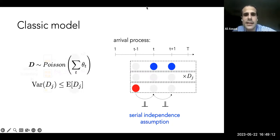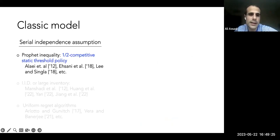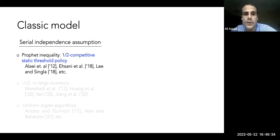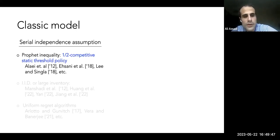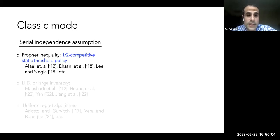This stochastic formulation is dominant in the literature; there is very limited work that deviates from the serial independence assumption. The simplest problem is the profit inequality problem with a single resource. An important result, from operations, economics, and computer science, is that using a static threshold policy on rewards achieves half-competitiveness — half of the offline optimum — and this is tight. It can be extended beyond single resources to matching and matroid constraints.